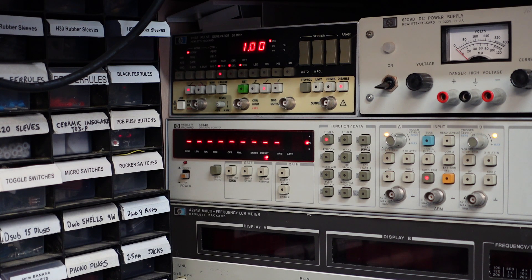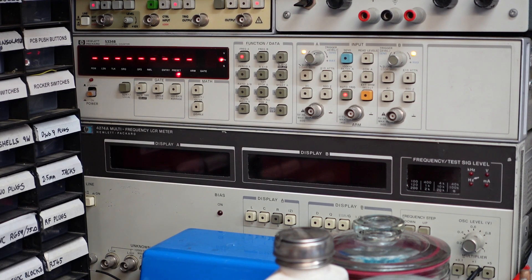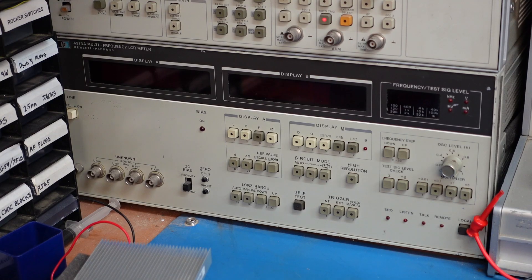Then I have a universal counter, an HP 5334B. I don't know how fast it is—it's probably a good few megahertz—it's plenty fast enough for me. And at the bottom there is an LCR meter, an HP 4274A.